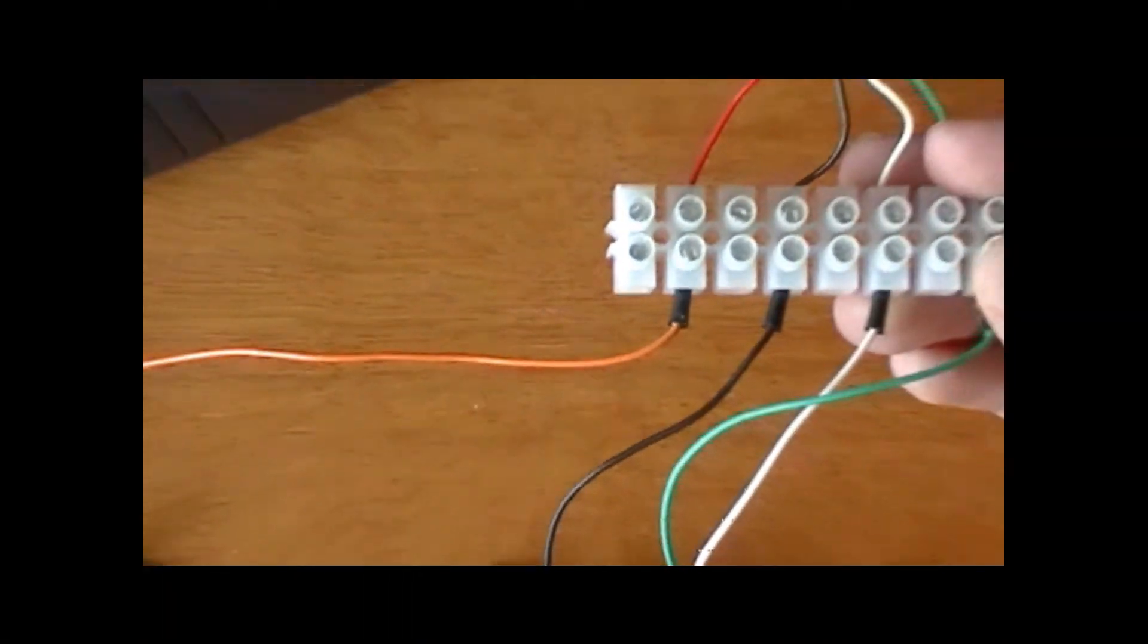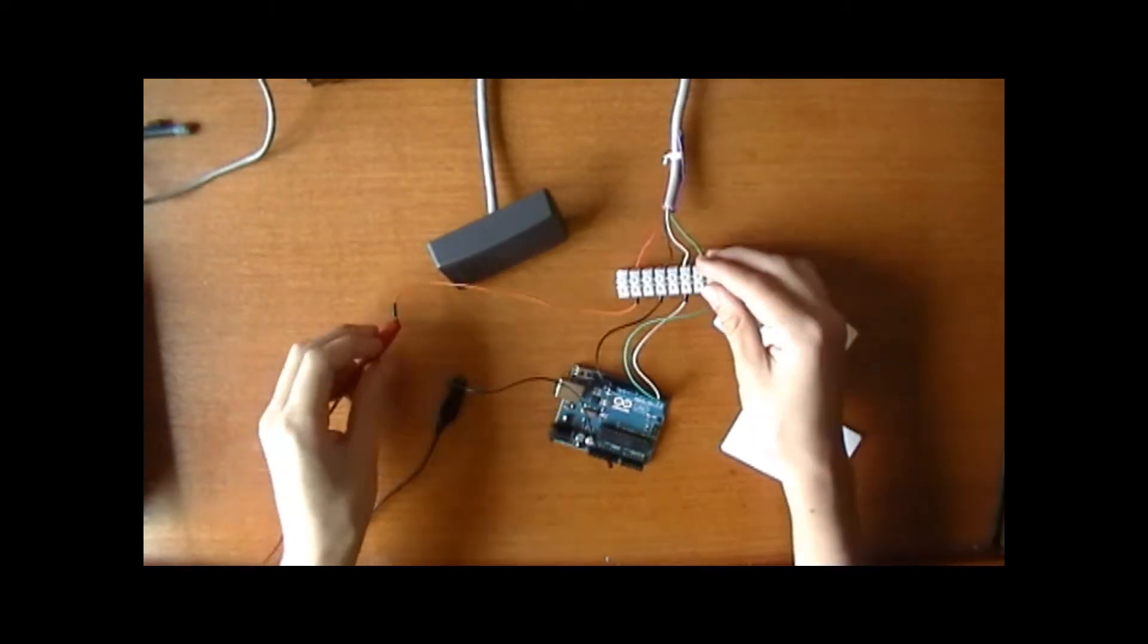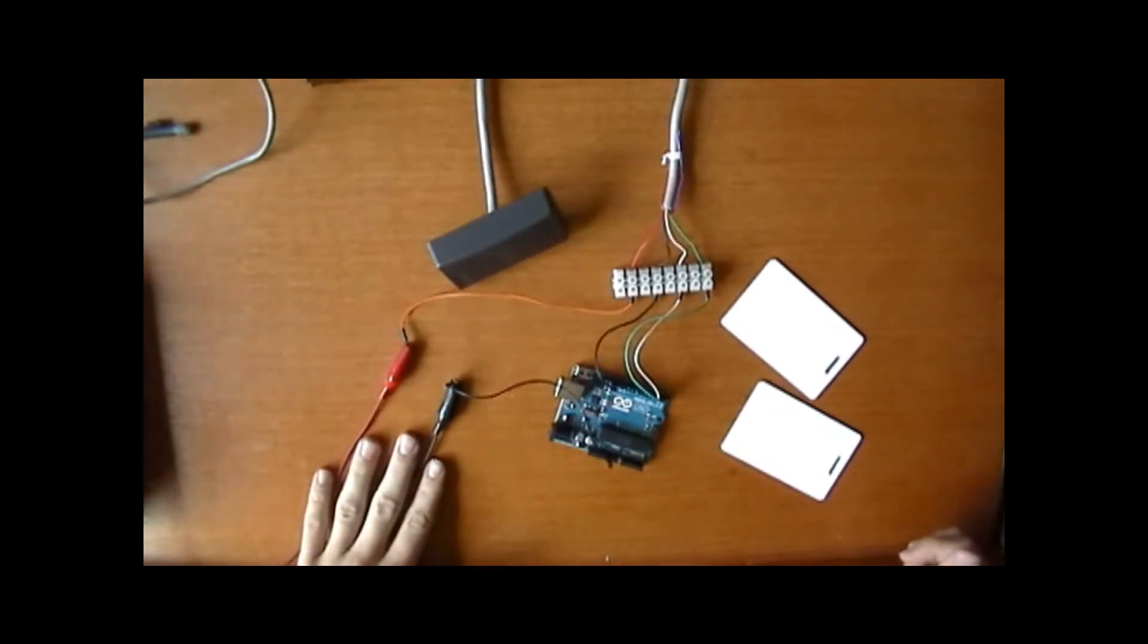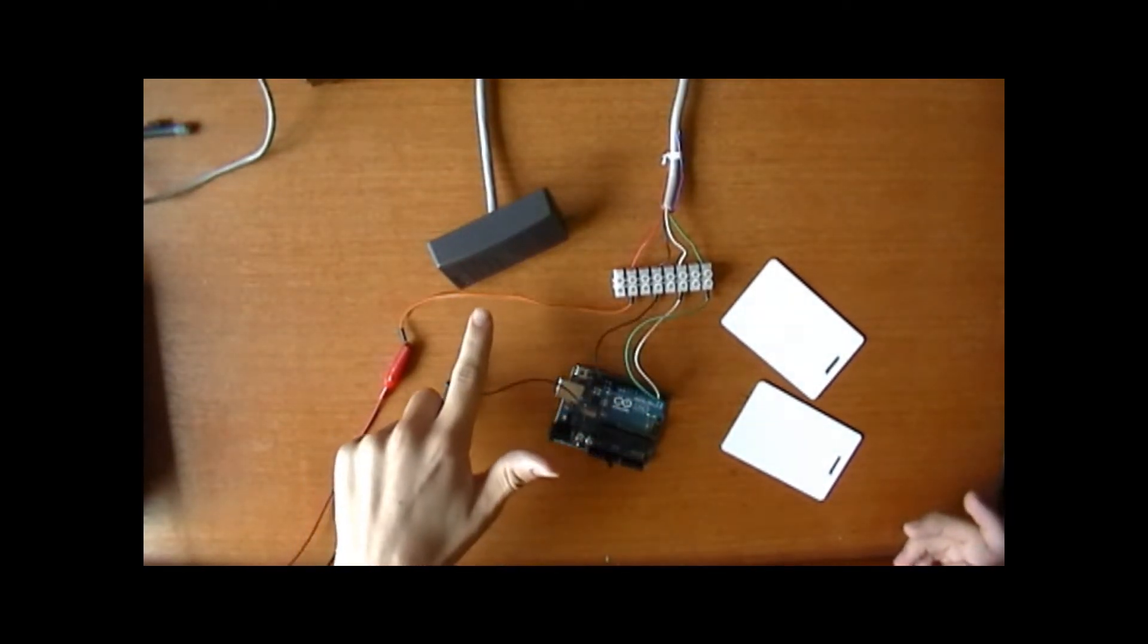And the orange goes to the positive on my Ultronix panel. So these two wires here come from my Ultronix panel. And one goes to the ground, one goes to the positive.